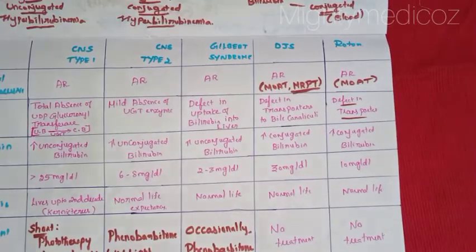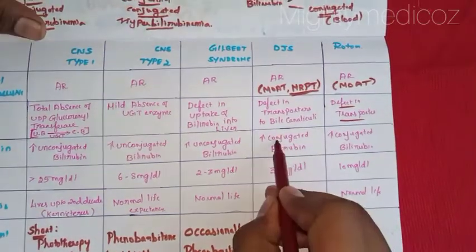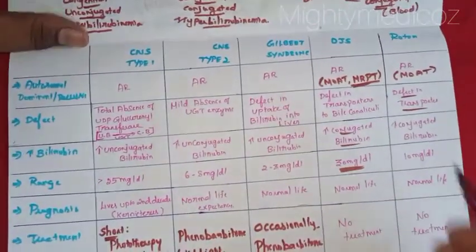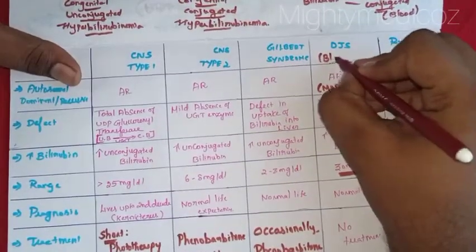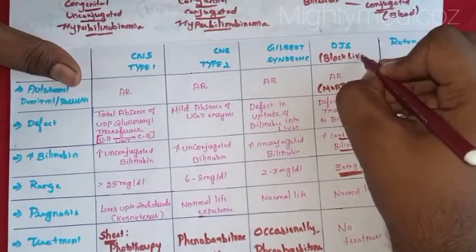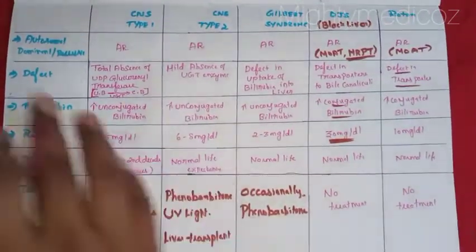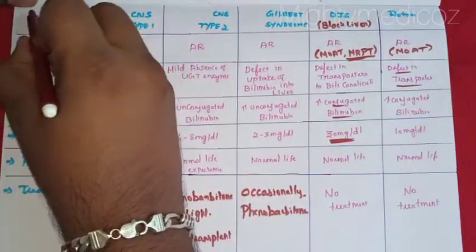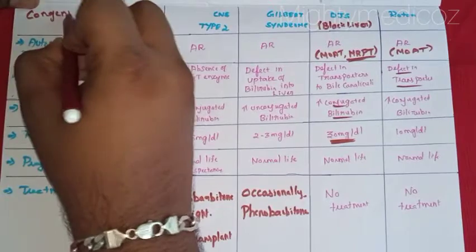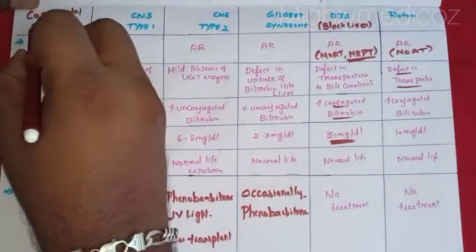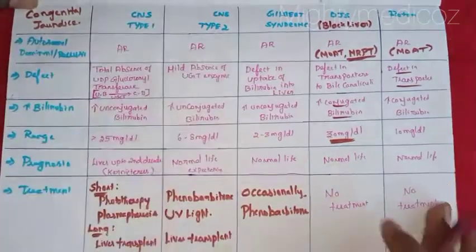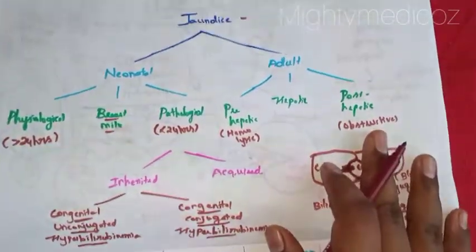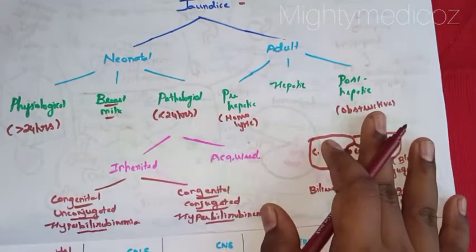Currently there is no specific treatment for Rotor syndrome. To summarize, Dubin-Johnson syndrome is also called black liver disease because deposited conjugated bilirubin turns the liver black. This entire page covers congenital jaundice, and you can write this for 10 or 5 mark exam questions. In the next video, we will deal with other types of jaundice. Please like, share, subscribe, and comment. Thank you.